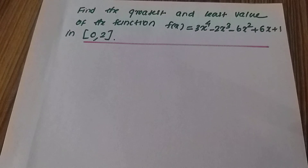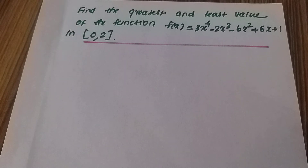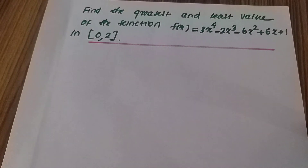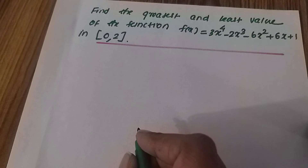The greatest value and least value of the function — first we will find the maximum and minimum of the function. The greatest value of the function corresponds to the maximum, and the least value corresponds to the minimum. So first we will find the maximum and minimum of the function.